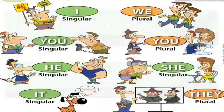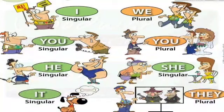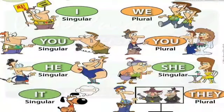Children, now we should know where pronouns are used — in singular noun and plural noun. I is used in place of a singular noun. We is used in place of a plural noun. But you is used in both places — in singular noun also and in plural noun also. She and he are used in place of a singular noun. It is also used in place of a singular noun. But they is used in place of a plural noun.